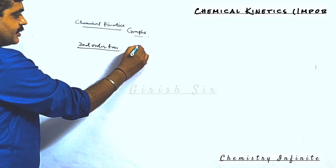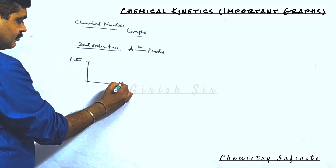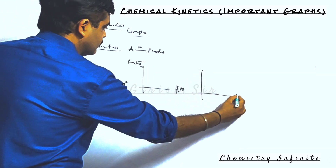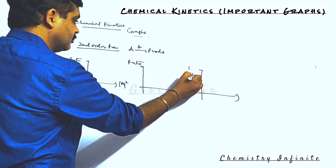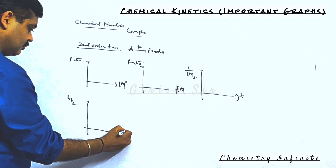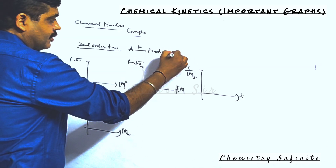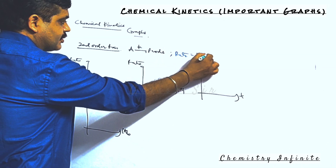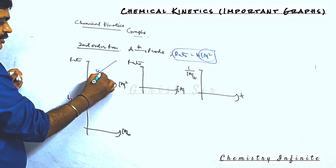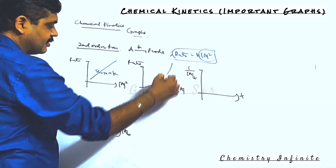Let's see the graphs for a second-order reaction. The first graph: the rate of a second-order reaction depends on A squared, so the rate versus A² graph has a slope equal to k. The second graph, rate versus A: as A increases, this is how the rate increases.